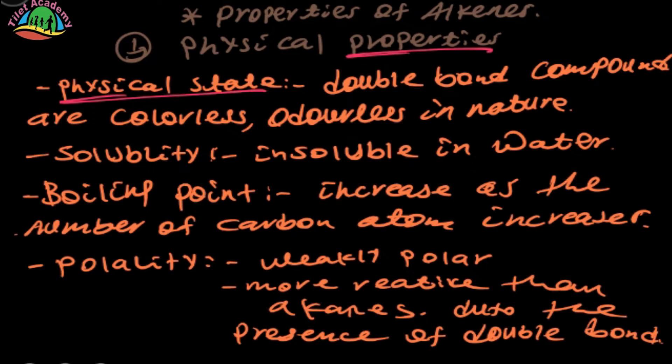Due to the presence of the double bond, the compounds of alkene are colorless and odorless in nature. If you look at the double bond, it's colorless and odorless in nature.